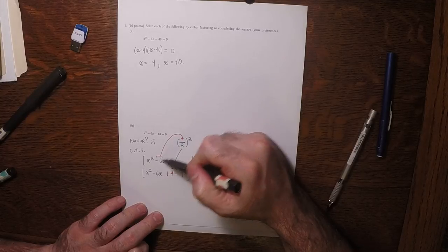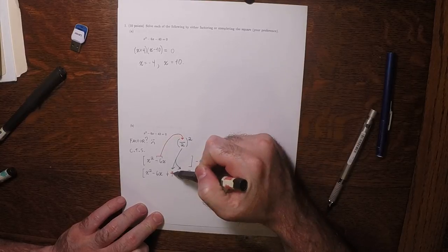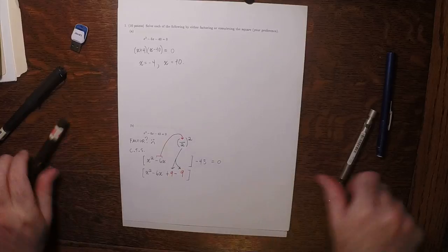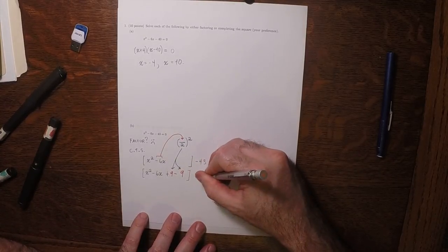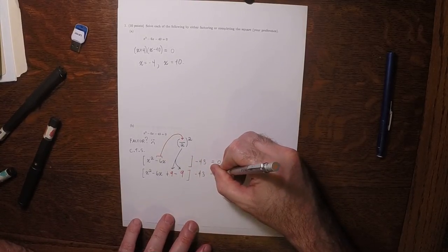So half of negative 6 is negative 3, squared is 9. Add that much, subtract the same. And then minus 43 here. That's equal to 0.